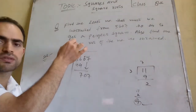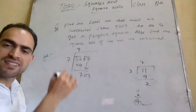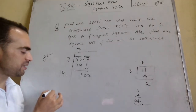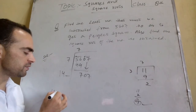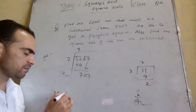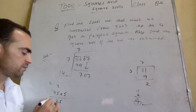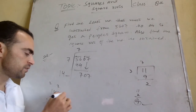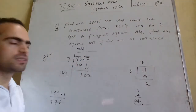Now double the quotient: 7 × 2 = 14. Write 14 and leave a space for the next digit. We need to find which digit to place in that space. Try 4: write 144, and 144 × 4 = 576. Check if this fits the current dividend.